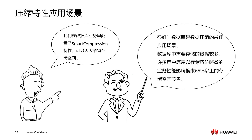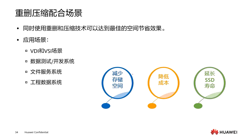There are also scenarios involving combined use of heavy deletion and compression. We can combine smart dedupe and smart compression — applying both features together to data development testing systems, document business systems, or engineering data systems — to achieve the best space saving effect. Combining the two features also reduces procurement and maintenance costs. After using the heavy deletion and compression features, the amount of data written to SSD and the number of write operations decrease, reducing SSD wear and extending the lifespan of SSD drives.